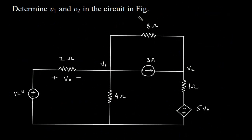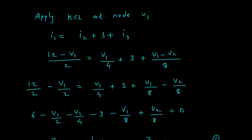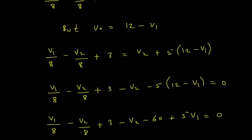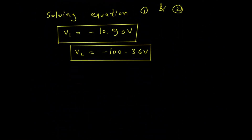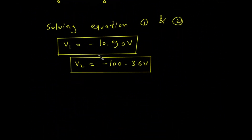So what we had to find — we had to determine V1 and V2 in the circuit. V1 equals minus 10.90 V and V2 equals minus 100.36 V. For electrical and electronics engineering related questions, visit the link in the description below.